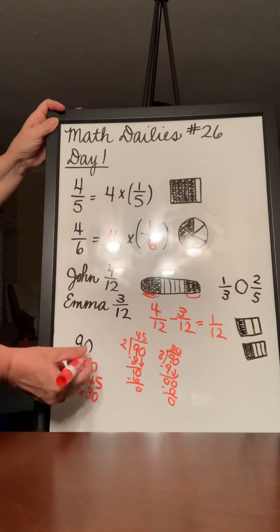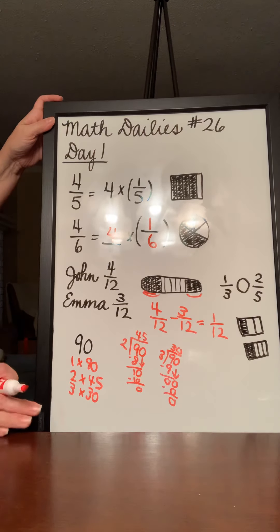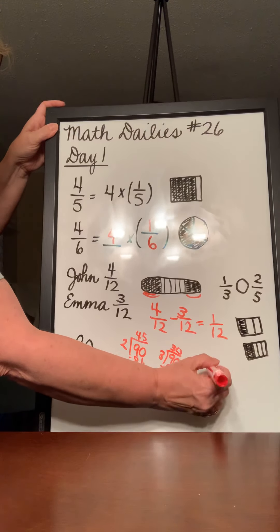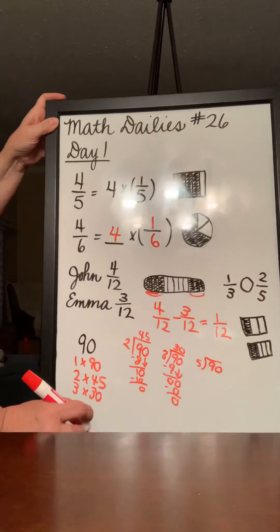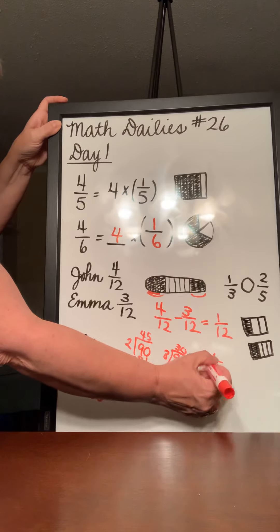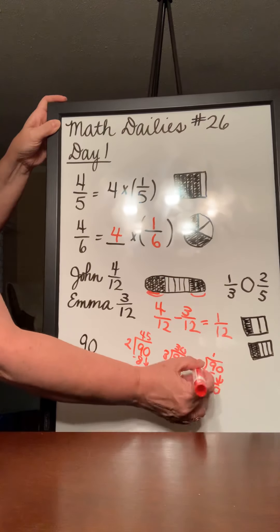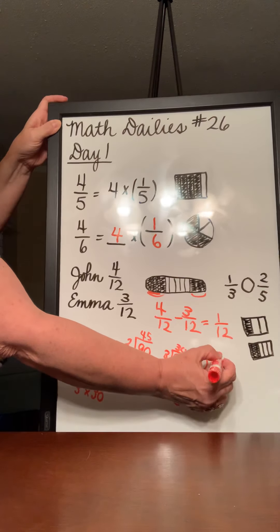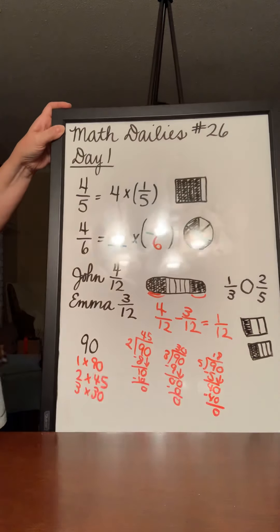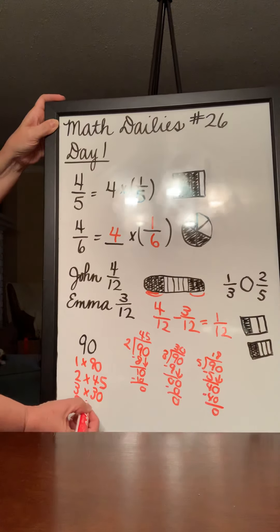What about 5? We know that if a number is multiplied by 5, the product will end with a 5 or a 0. So we know that 5 is going to be a factor. And just to check and see what you have to multiply by, 5 fits into 9 one time. 1 times 5 is 5. 9 minus 5 is 4. Bring down your 0. 5 will fit into 40, 8 times. 5 times 8 is 40. Subtract and you get 0. So 5 and 18 are factors.